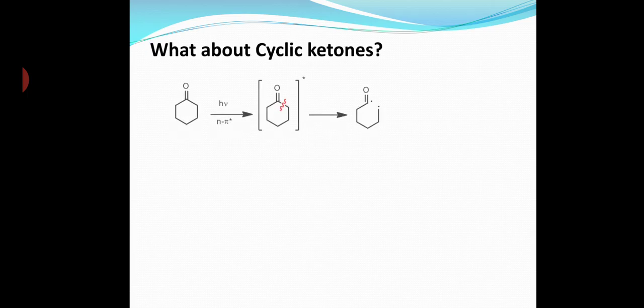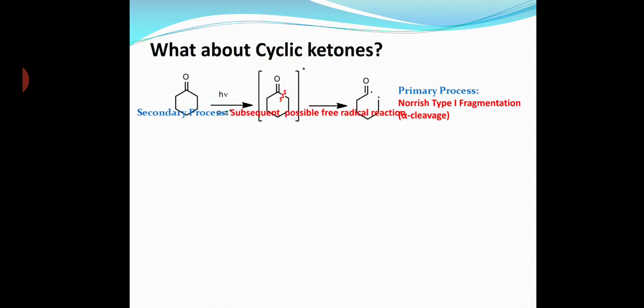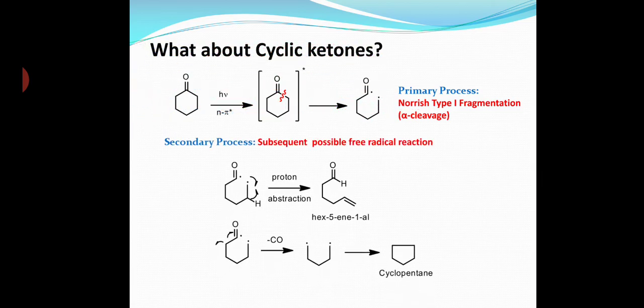What about cyclic ketones? Let's take cyclohexanone as an example. Cyclohexanone also undergoes Norrish Type 1 fragmentation; cleavage of the alpha bond gives rise to a diradical intermediate. This diradical can undergo subsequent free radical reactions: it can either abstract a proton from the methylene carbon at the 5-position to give hex-5-en-1-al, or it can undergo decarbonylation to give a 1,5-diradical, which can then join together to give cyclopentane.